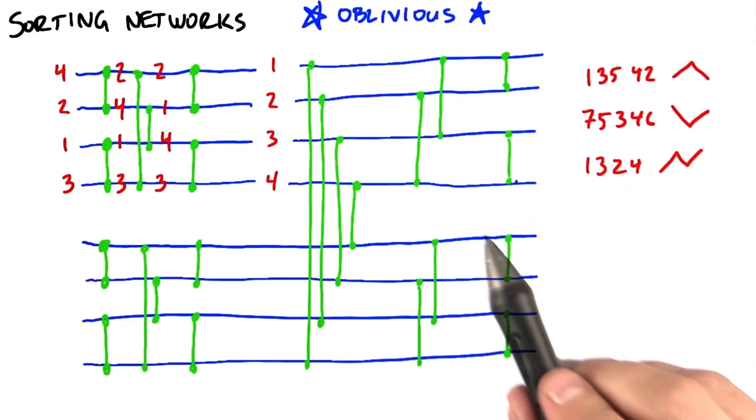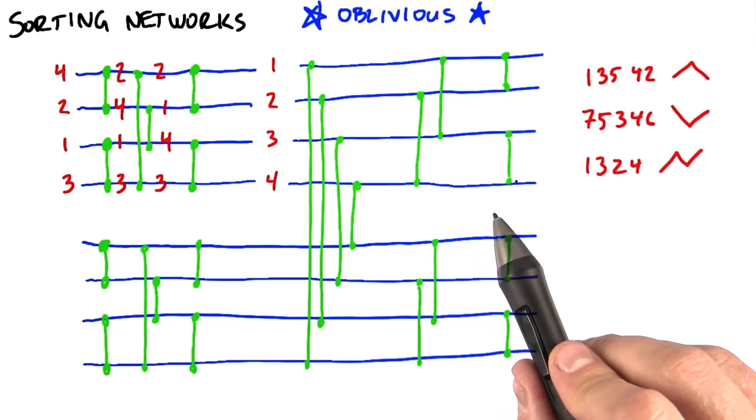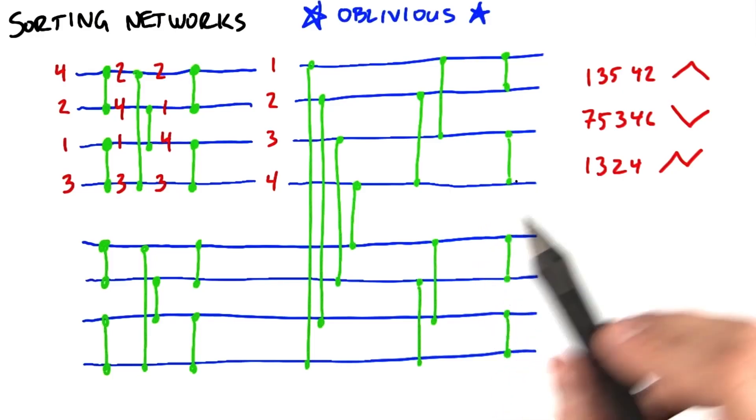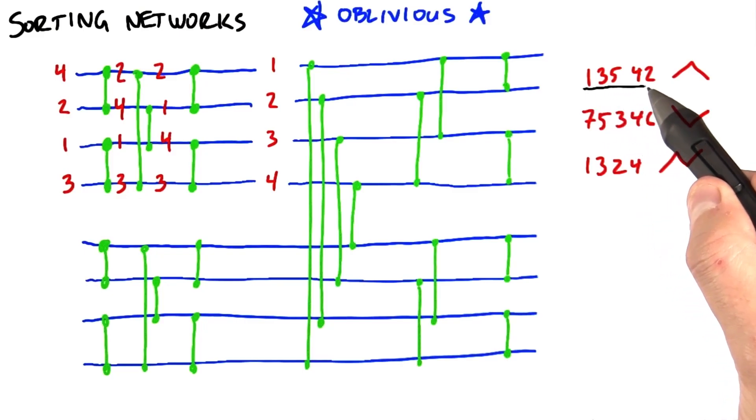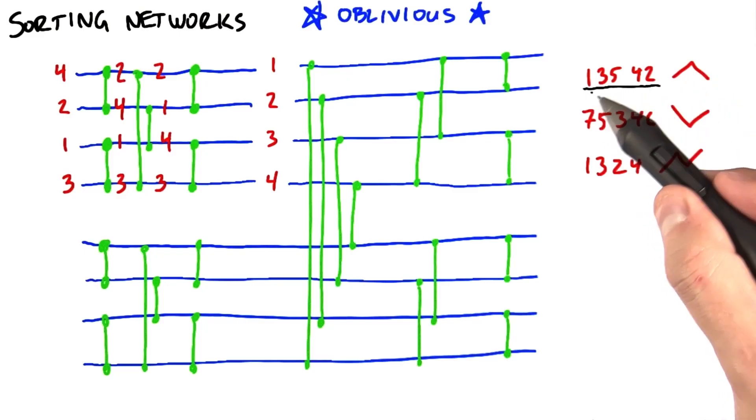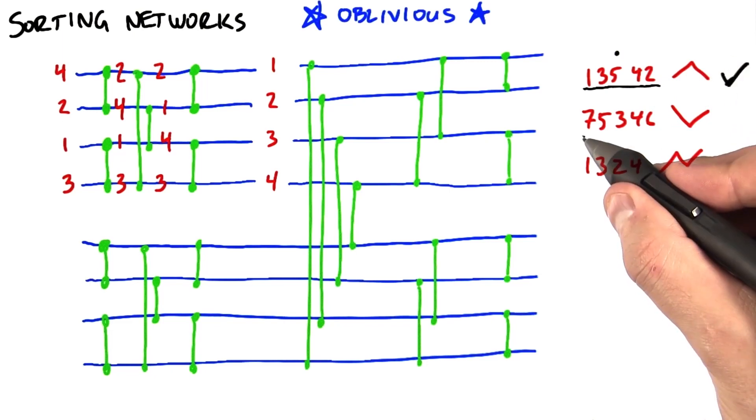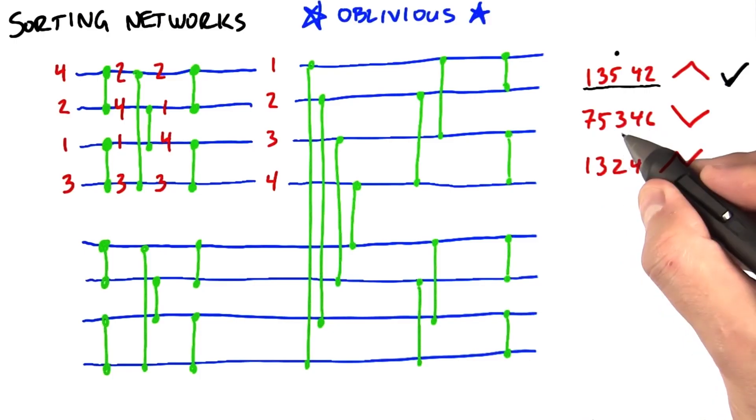So a bitonic sequence is a sequence that only changes direction a maximum of once. So if we look at this sequence here, we're going up for a little while and then down for a little while. But we only change direction right here. So this is bitonic. How about this sequence here? Well, we're going down and then up. Seven, five, three goes down, then we change direction and go back up. So sort of the trace of the sequence looks like that, and that is also bitonic.